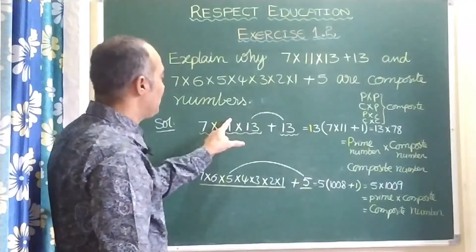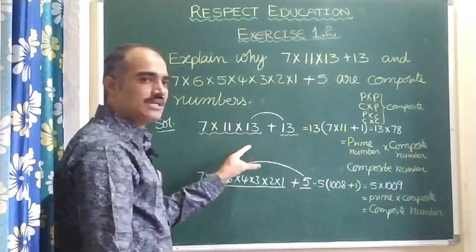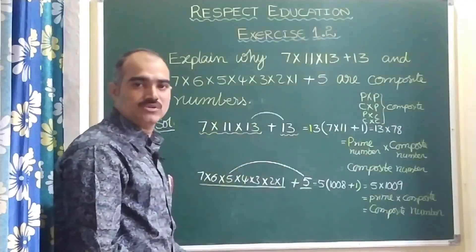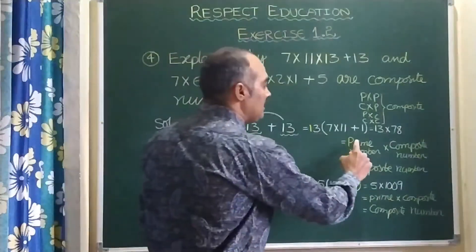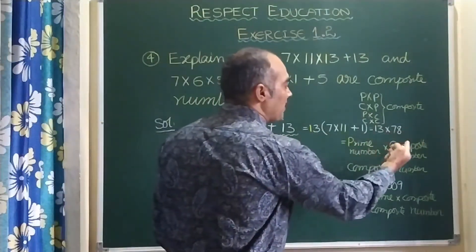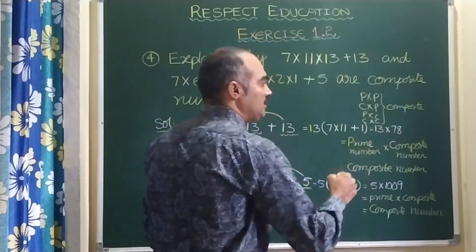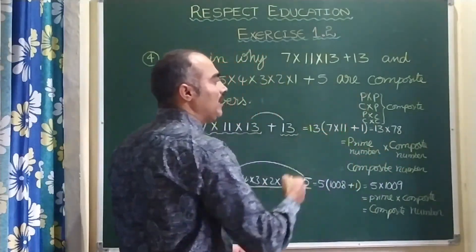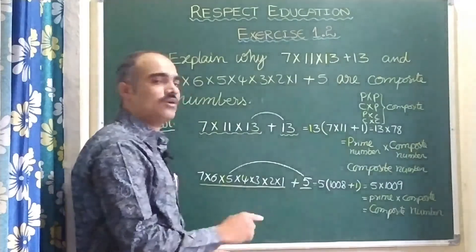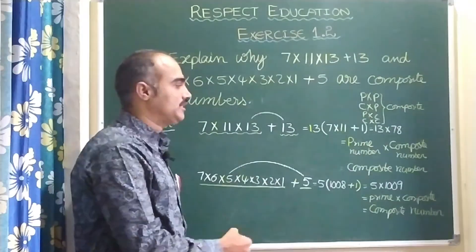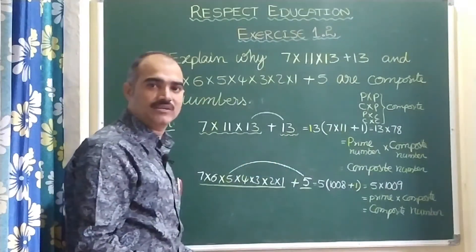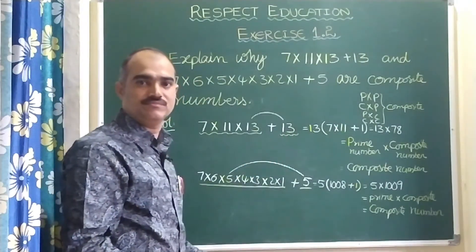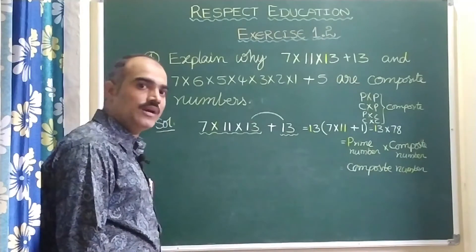Therefore, both the given numbers are composite numbers. The reason is that the product of prime and composite, or prime and prime, or composite and composite always gives a composite number.